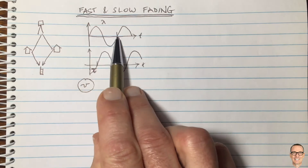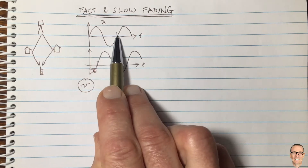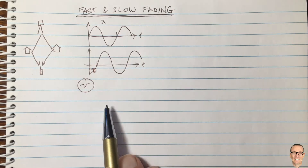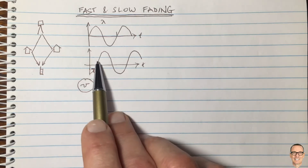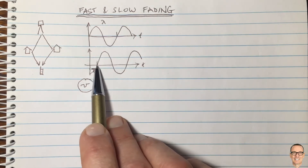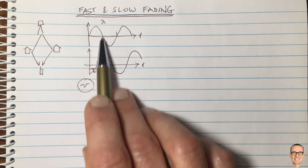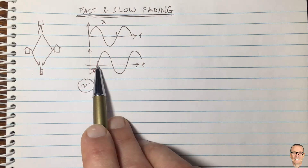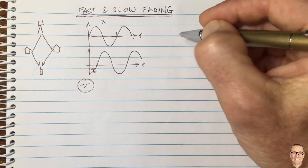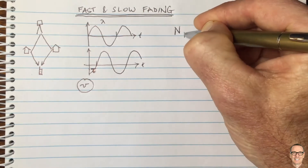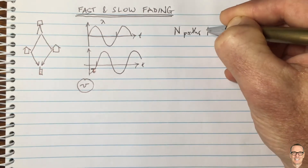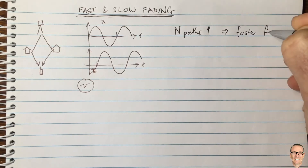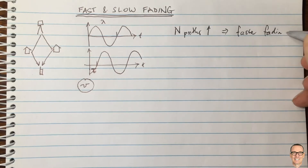If that delay is significant relative to λ as a percentage, and you have multiple paths all adding up, they'll all have their own delays and will be adding constructively and destructively. Therefore, when you move, you'll have faster fading — more components fading. As the number of paths N increases, this implies that fading happens faster. So that's faster fading from having more paths.